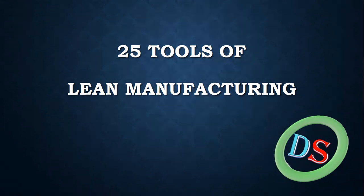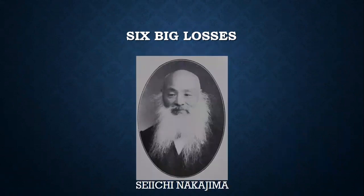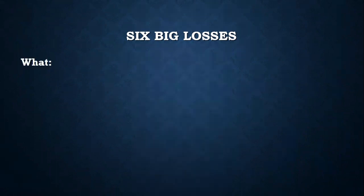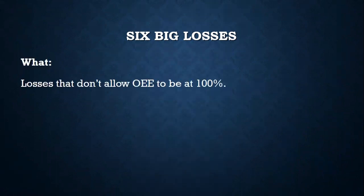In this video, we will learn the losses that exist in any manufacturing process which every manufacturing engineer or manager must know. They are called six big losses. Similar to OEE, six big losses were also conceptualized by Seiichi Nakajima, a Japanese pioneer and founder of the Total Productive Maintenance System. So, what is six big losses? These are the losses that don't allow OEE to be at 100%, if defined simply.